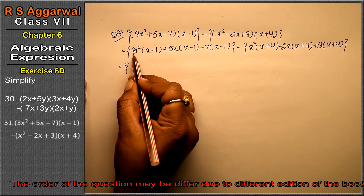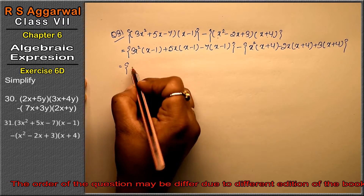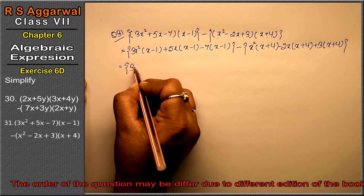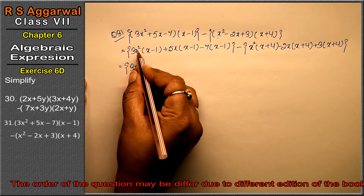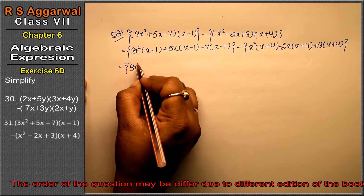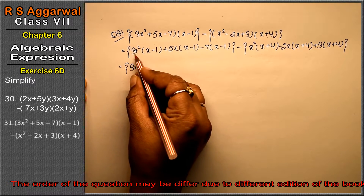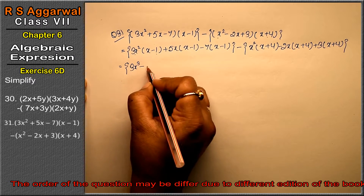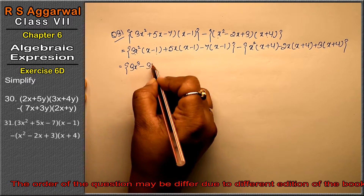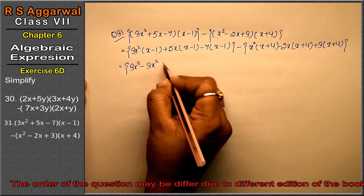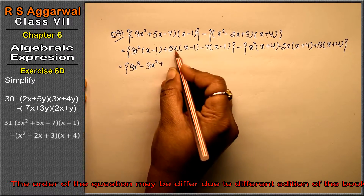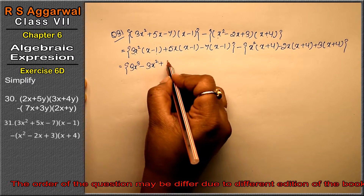Now open the middle bracket. 3x square into x: power adds, 2 plus 1 gives 3, so 3x cube. Minus 3x square into 1 gives minus 3x square. Plus 5x into x gives 5x square.